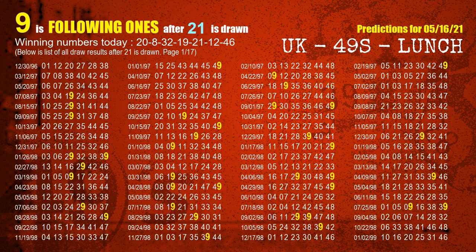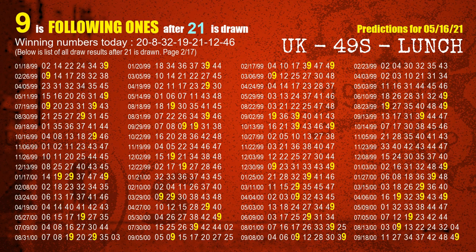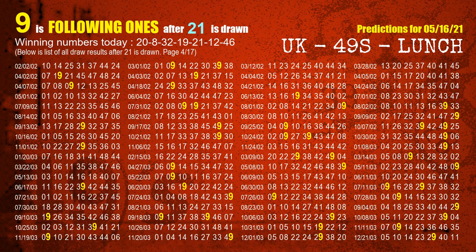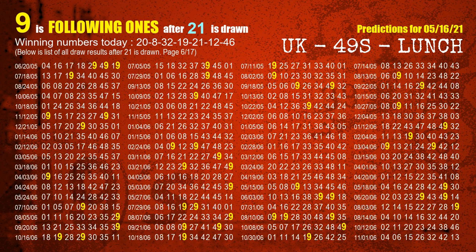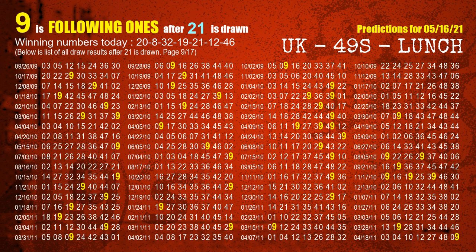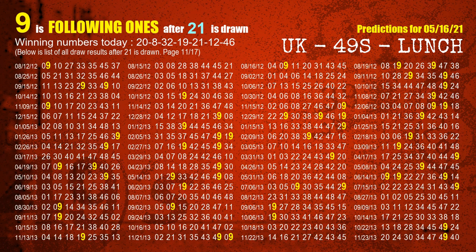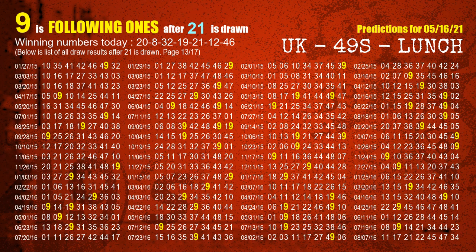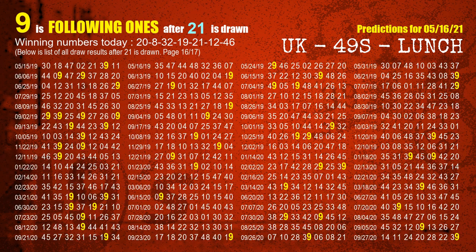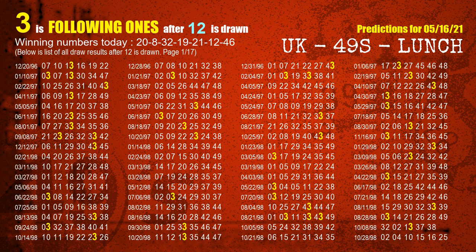The fifth winning number is 21. The most frequently following units digit is 9 when 21 is the winning number in the last draw. The sixth winning number is 12. The most frequently following units digit is 3 when 12 is the winning number in the last draw.